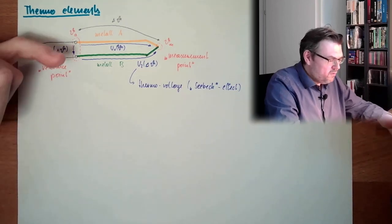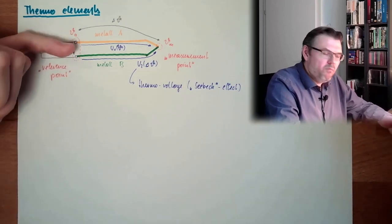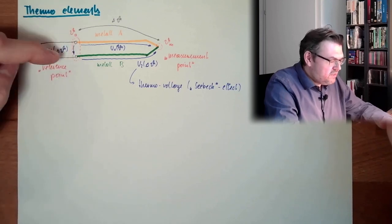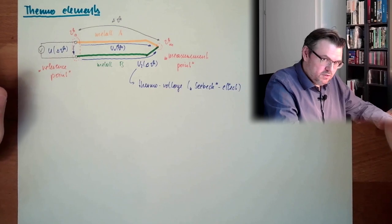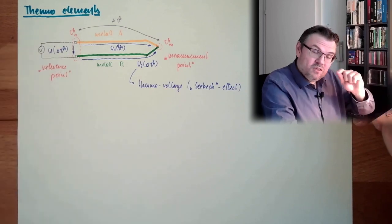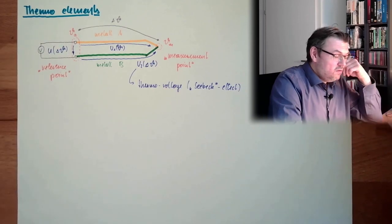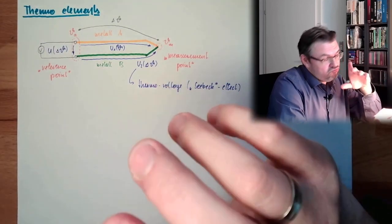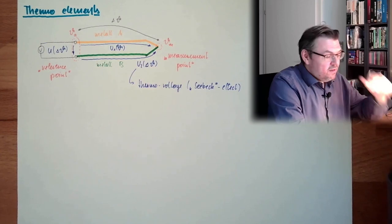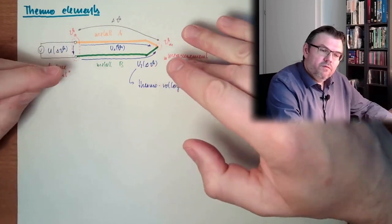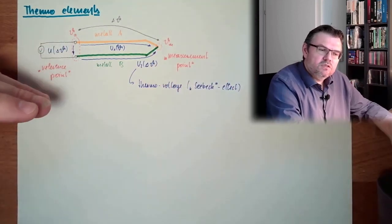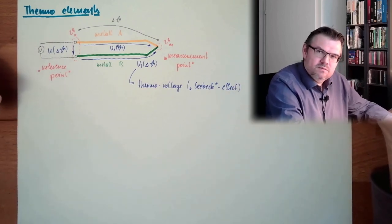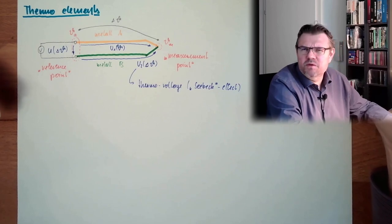What we want to have? We want to have a material pairing which results in a huge difference between the thermo-voltages. This difference should be linear to the voltage difference, and the materials should also withstand high temperatures without corroding. This is my wishing list. It cannot be fulfilled.